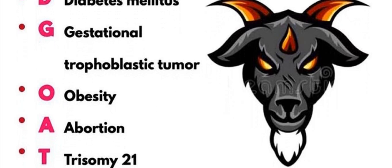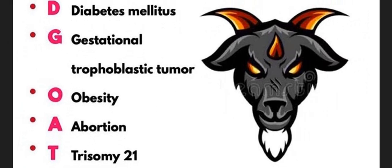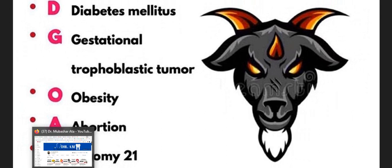T is for Trisomy 21 — this is the congenital disorder in which the alpha-fetoprotein is very low. So these are the five major causes of alpha-fetoprotein low level and the mnemonic is DEVIL'S GOAT.